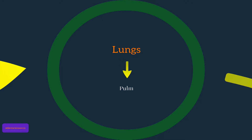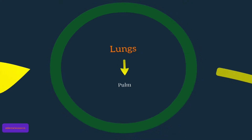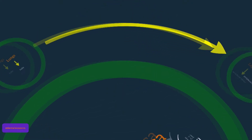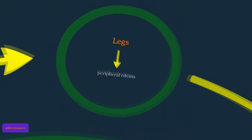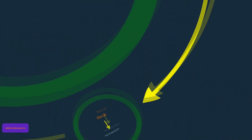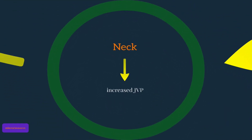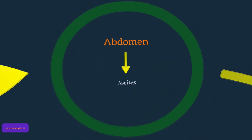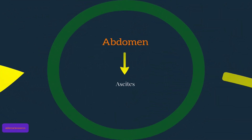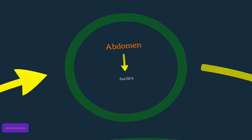In terms of the lung, this means pulmonary edema. In terms of the legs, this means peripheral edema. In the neck, it can manifest as increased jugular venous pressure. In the abdomen, it can present as ascites, and in males, it can also present as scrotal edema.